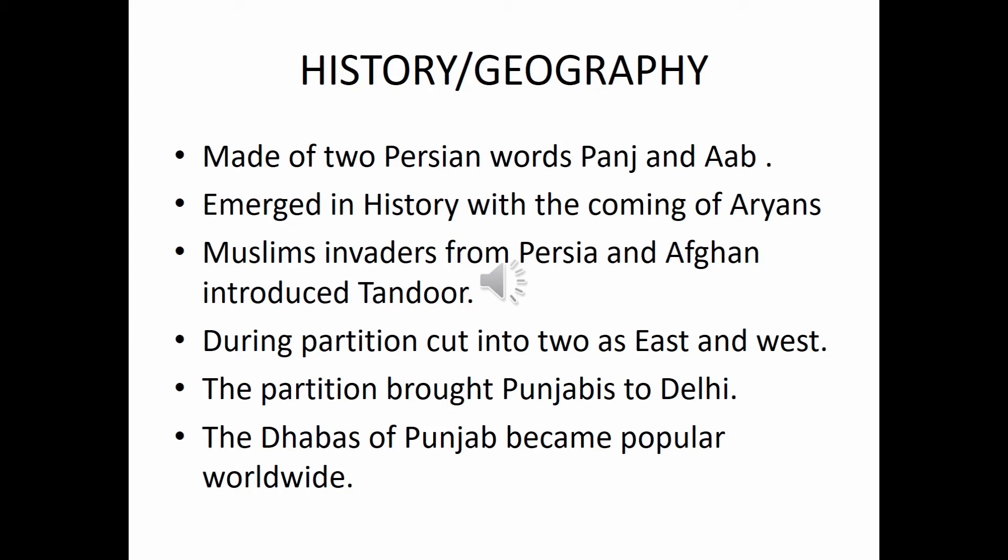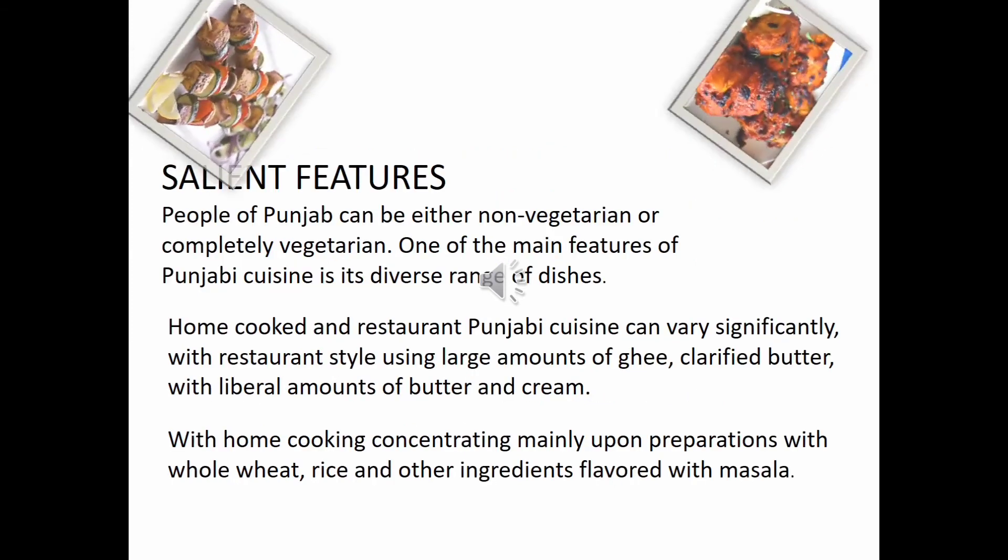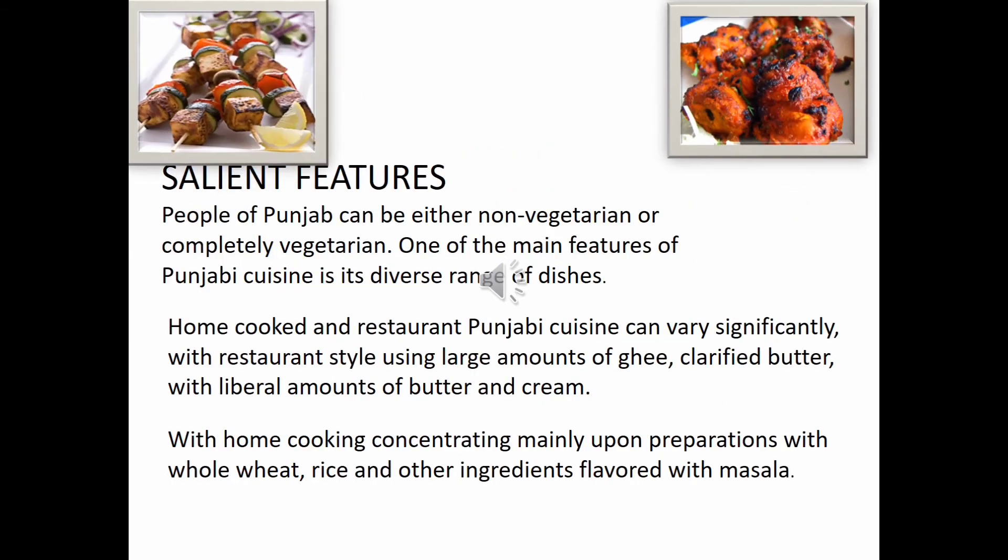After the partition, Punjab was divided into two — east and west. West went to Pakistan. After the partition, Punjabi people came and settled around Delhi, and they spread across the northern states, and the cuisine spread across northern states as well. This is how the cuisine became popular.